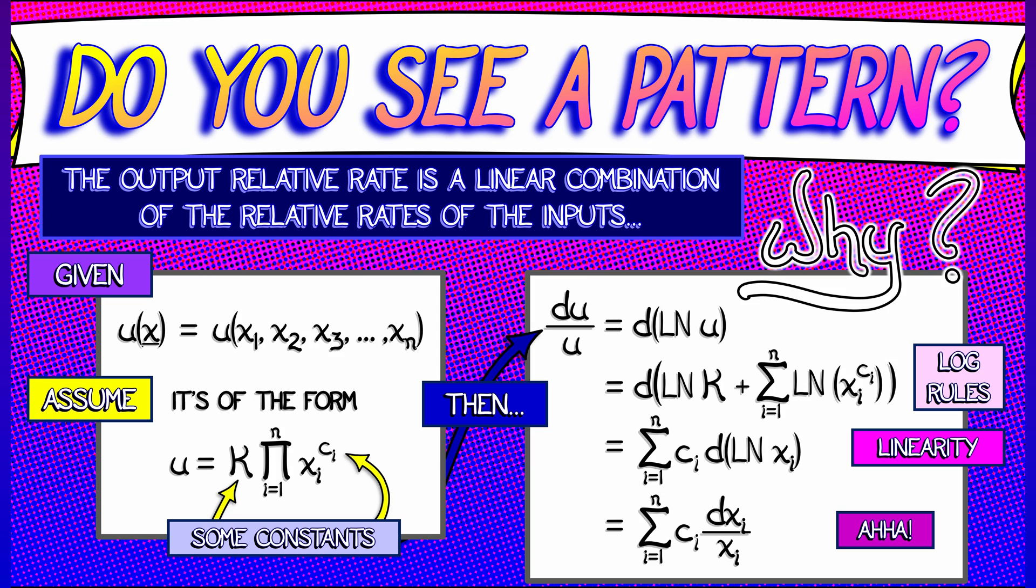That's it. That means that the relative rate of change of u is a linear combination of the relative rates of change of the input variables, where the coefficients out in front are the powers. That is so powerful. That is so satisfying and so useful in applications.